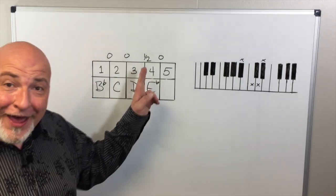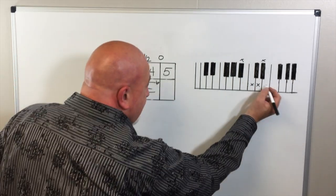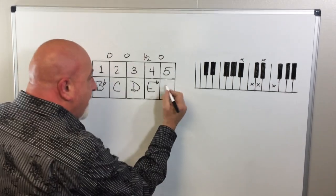And then between the fourth and the fifth position, there's a whole step. So we are going to skip E and we're going to land on F.